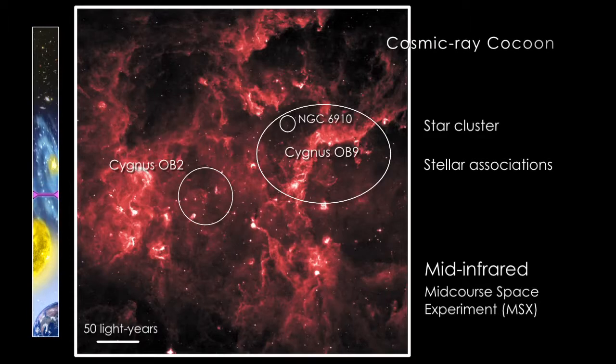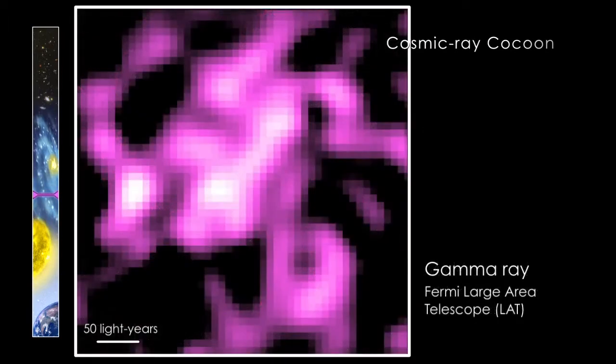Fermi found that star birth and death in the Cygnus X star factory corrals particles and boosts them to cosmic ray energies.